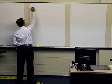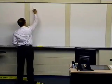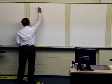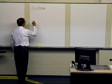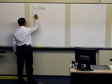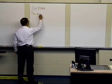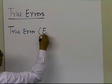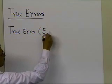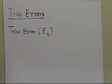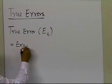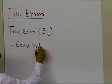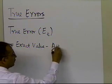In this segment, we're going to talk about true errors. If you look at the definition of true error, it is denoted by uppercase E subscript t — E standing for error and t standing for true — and is defined as the exact value minus the approximate value.